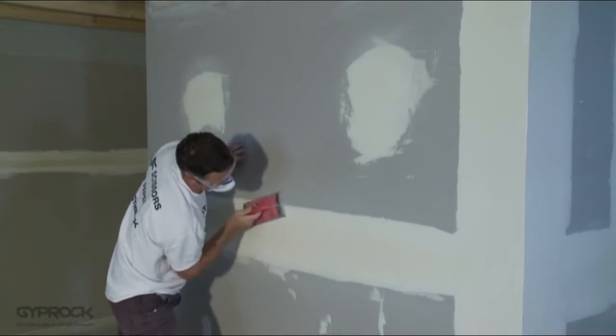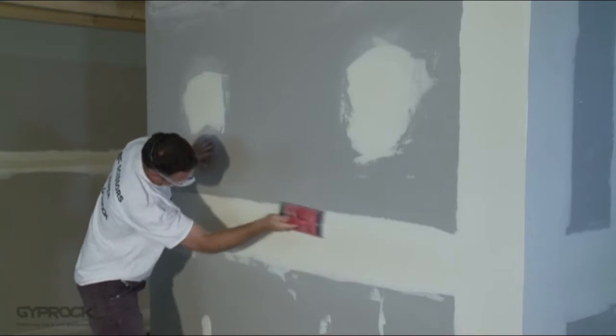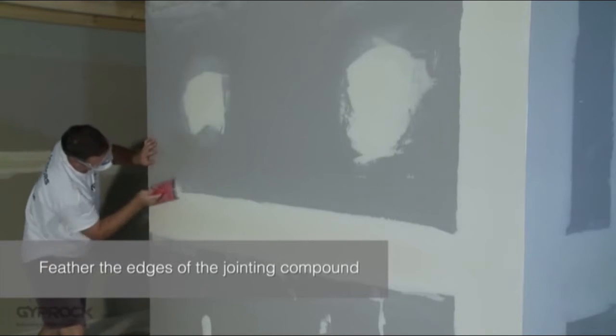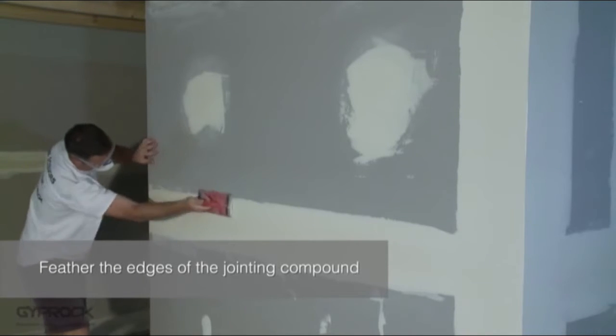With sandpaper, it's easier to control the final finish. Start by gently feathering the edges of the jointing compound, taking care not to scuff the paper surface of the board, which can create a furry effect.